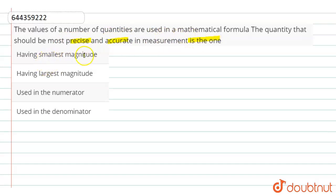Option number one: having smallest magnitude. Option number two: having largest magnitude. Option C: used in numerator. And option number D: used in denominator.